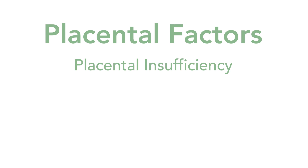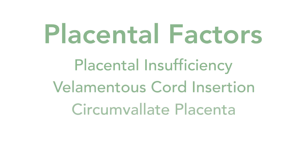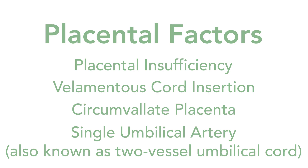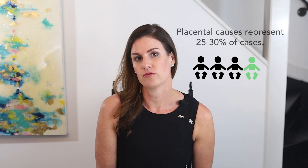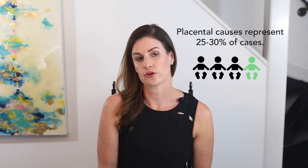Other placental issues associated with growth restriction include a velamentous cord insertion, a circumvallate placenta, and a single umbilical artery, also known as a two-vessel cord. This cause — placental causes — represents one out of every four babies with growth restriction, or about 25 to 30 percent of all cases.